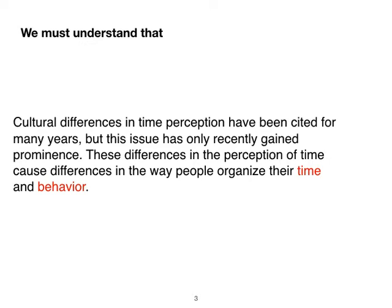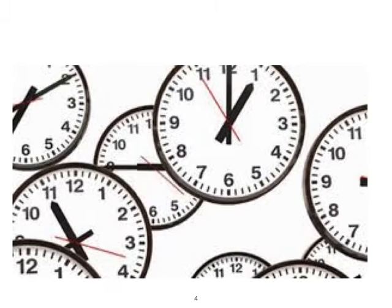The important words here are time and behavior. People organize their behavior in accordance with the concept of time — whether it's polychronic or monochronic. The concept of time is very important and that's why we're discussing it in much more detail today. It's just a simple clock, but it's the concept of time that matters. The space you're living in — maybe 11 o'clock in Europe, 11 o'clock in Asia — but how people perceive time, that's the important thing.